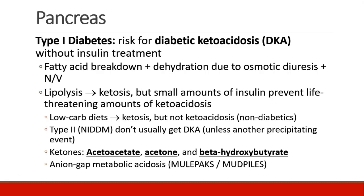Patients with type 1 diabetes are at risk for diabetic ketoacidosis, or DKA, if they don't receive insulin treatment. In the absence of glucose being transported into the cells, the body will start to break down fatty acids for nutrition. They also become dehydrated due to osmotic diuresis from the hyperglycemia, and they develop nausea and vomiting. The breakdown of fatty acids, or lipolysis, leads to ketosis.